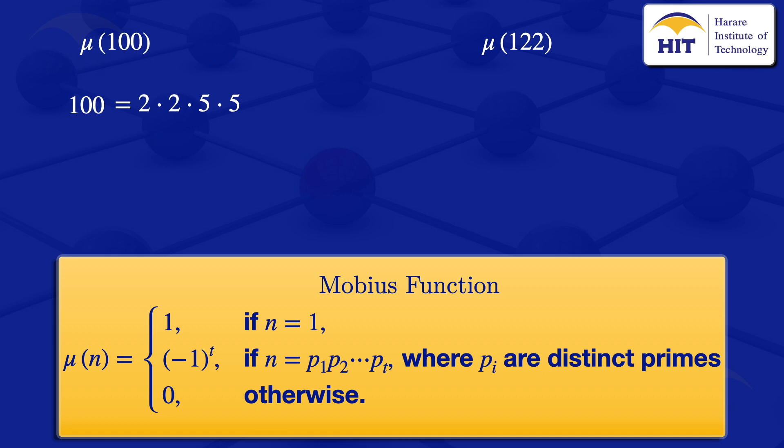In this case we are having the primes 2, 2 - 2 is not distinct from 2, so it fits in the category of the otherwise here. So we have that μ(100) is equal to 0.